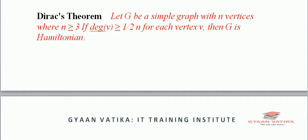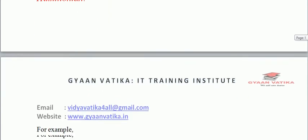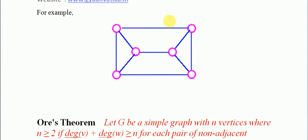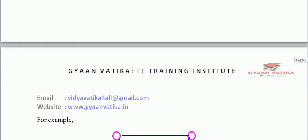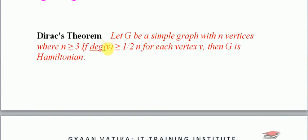This particular Dirac theorem gives us a sufficient condition: if this condition is true, then the given graph is Hamiltonian. Let us check with an example. Taking this particular vertex, its degree is 1, 2, 3 — we calculate degree by checking the number of edges coming out from that vertex, so the degree of this vertex is 3.